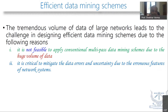We cannot really apply conventional multi-pass data mining schemes because of the volume of data. Not only that, the data is also connected and noisy, so it's critical to mitigate data errors and take into consideration the uncertainty in data, especially in network systems. Because if you have a wrong connection or give a wrong structure of the network, the entire decision making goes wrong — the nodes are no longer in isolation.